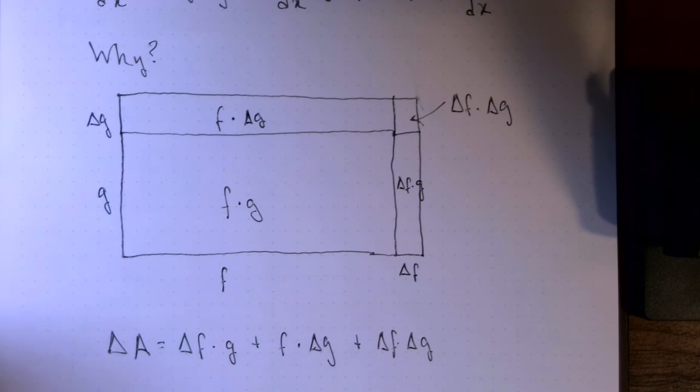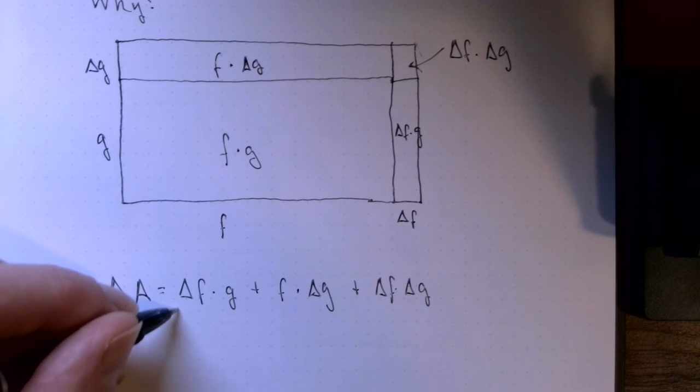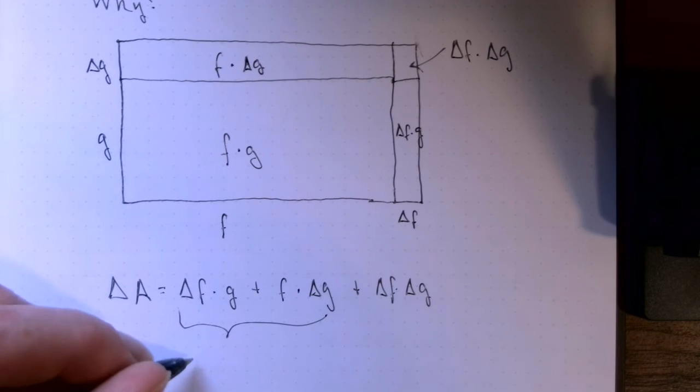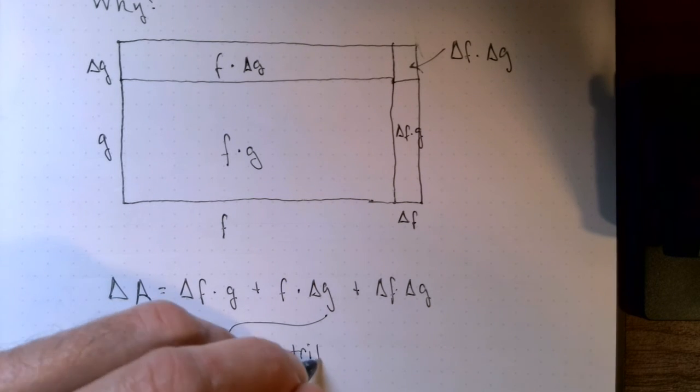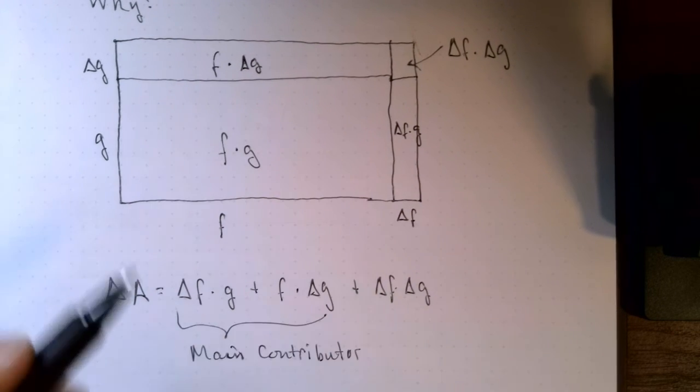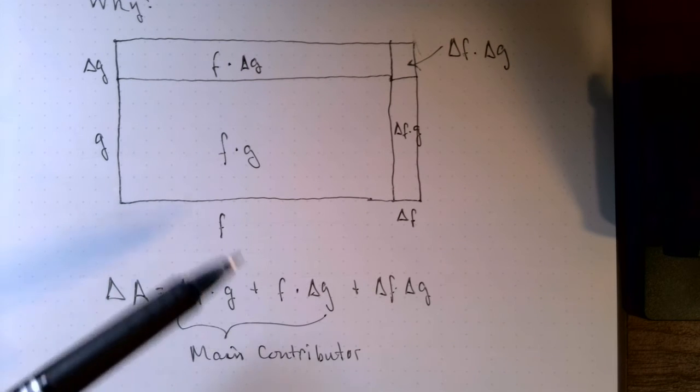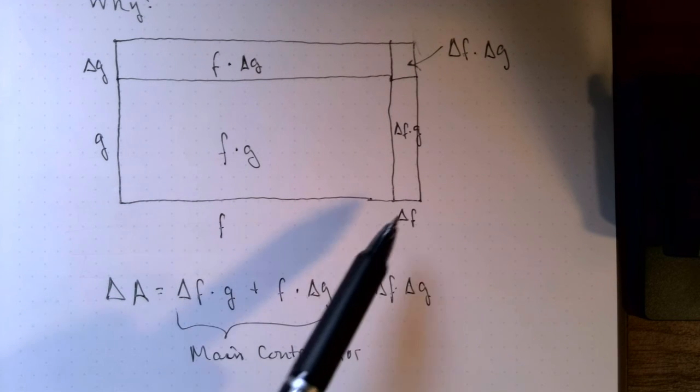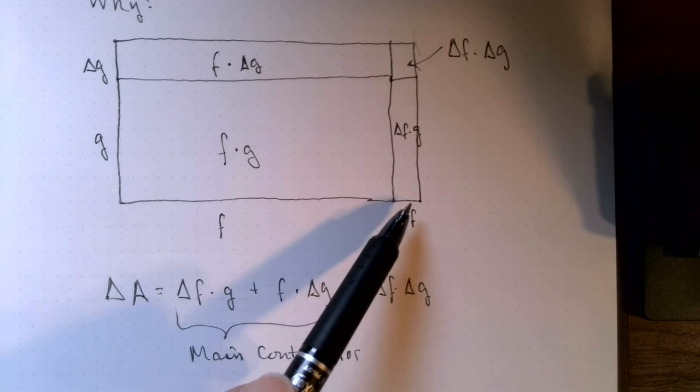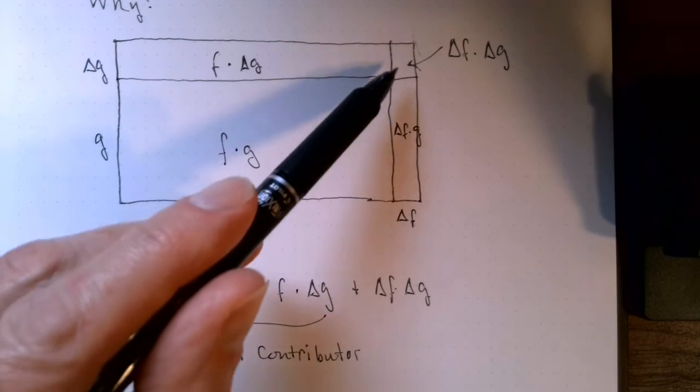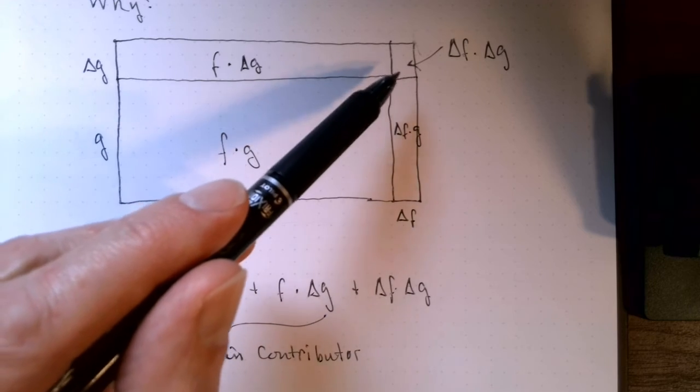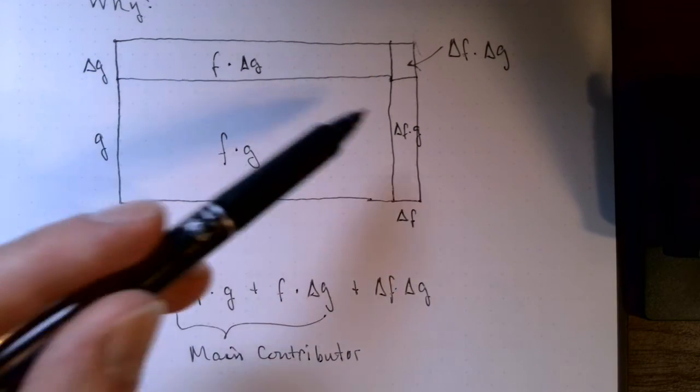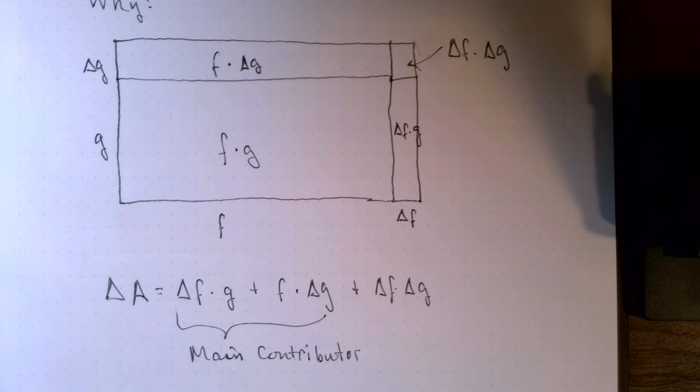So the main contribution for the change in area is right here, these first two terms. If F is changing by not a lot right here, and G is changing by not a lot, then this will be kind of like second degree of smallness right up there in the corner. So these two strips are the main contributors to the change in area.